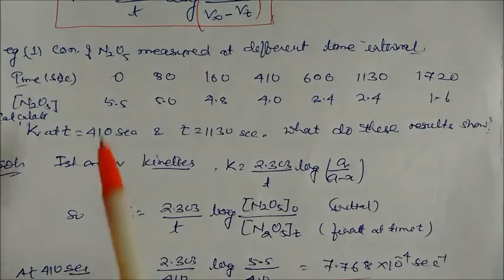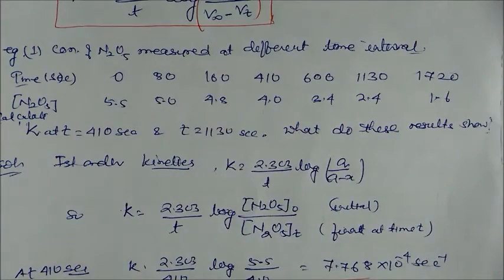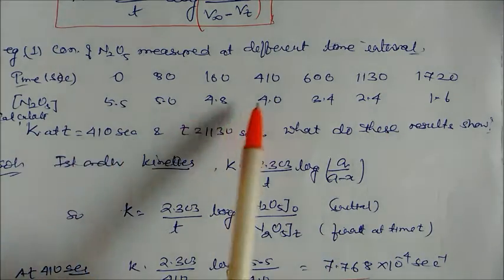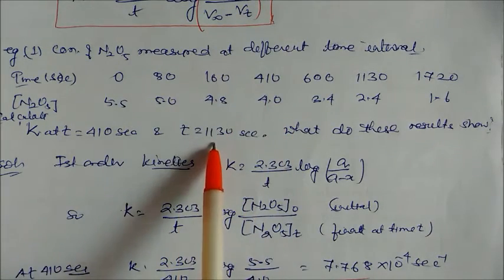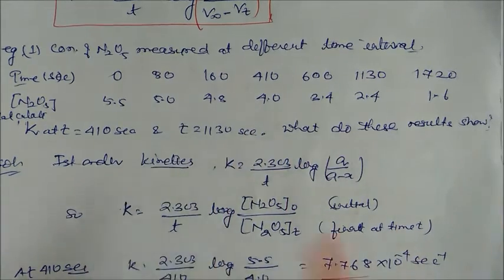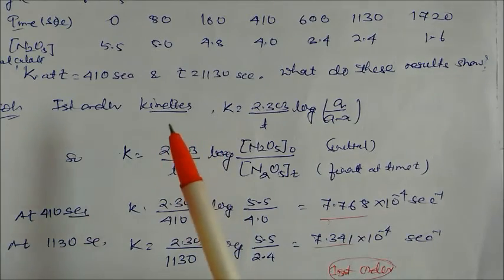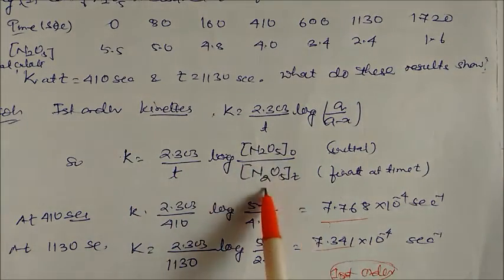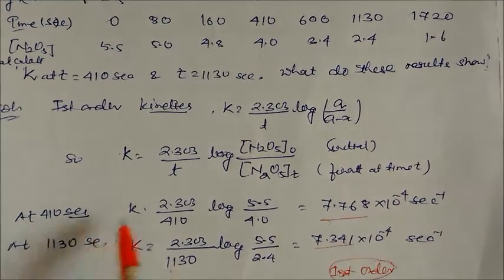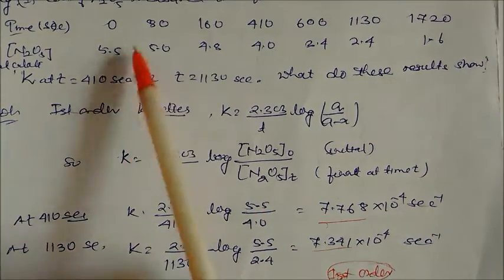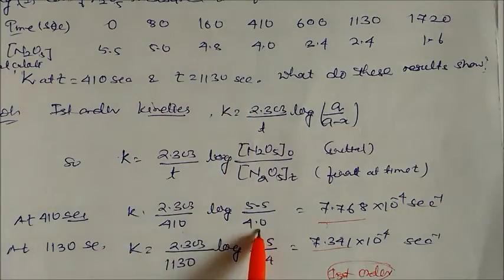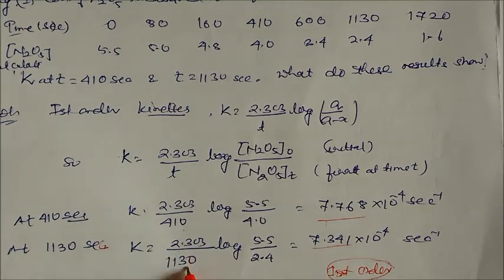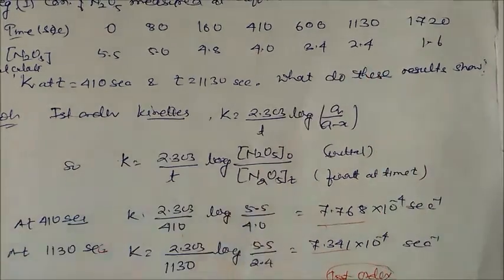Consider an example: the concentration of N₂O₅ is measured at different time intervals. Calculate the rate constant at t = 410 s and t = 1130 s. Using k = (2.303/t) × log([N₂O₅]₀/[N₂O₅]t): at 410 s with initial concentration 5.5 and concentration 4 at t = 410 s, we get a value; similarly at 1130 s with concentration 2.4. Since both values are constant, this confirms a first order reaction.